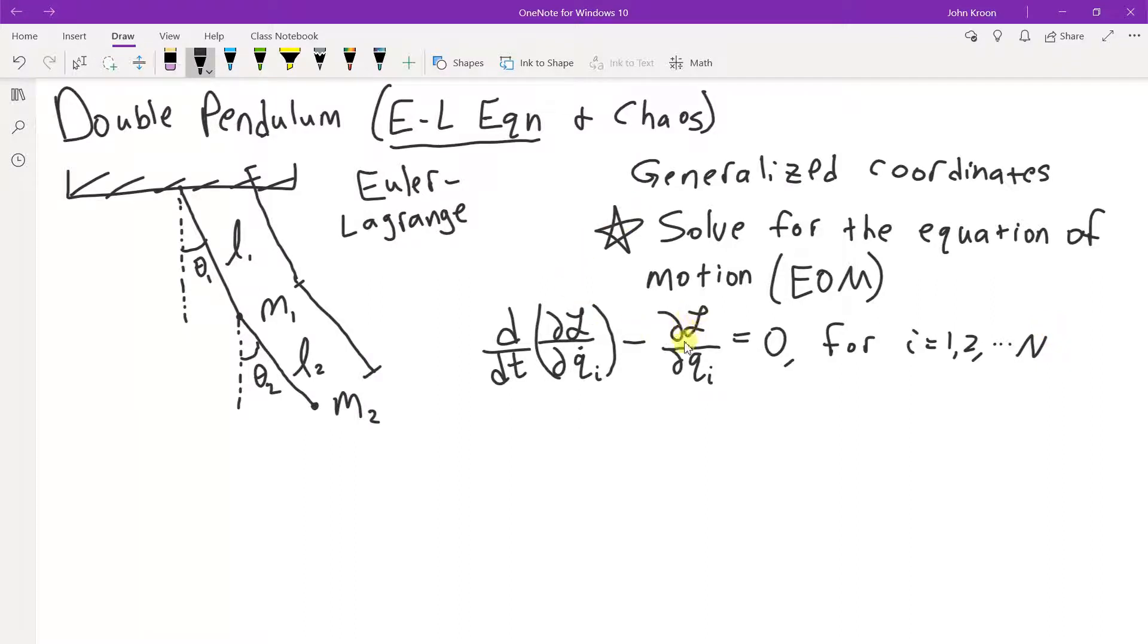Now you might see it written the other way around. You might have dL by dq minus d by dt, dL dq dot equals zero. But that's just, it's the same thing. It's an equivalent expression because it equals zero. And so negative zero is nonsensical. It's just zero. So you can write it in either order you want. I like it in this format better.